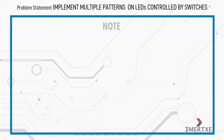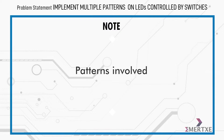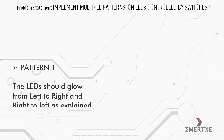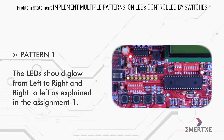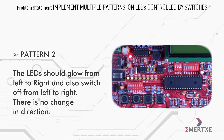Please note the different patterns involved in this assignment. In pattern 1, the LEDs should glow from left to right and right to left, as explained in assignment 1. In pattern 2, the LEDs should glow from left to right and also switch off from left to right — there is no change in direction.